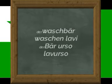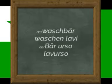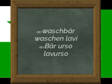For example, Waschbär — the word for lavurso. This is vashin, which means lav, and bär, which means urso.